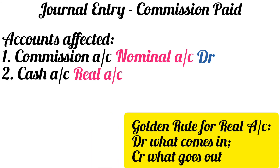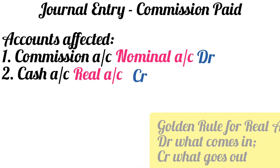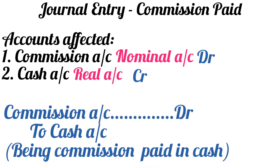Cash account is a real account. The golden rule for real accounts is: debit what comes in, credit what goes out. When you pay commission, cash goes out, hence the cash account will be credited. So the journal entry will become: commission account debit to cash account.